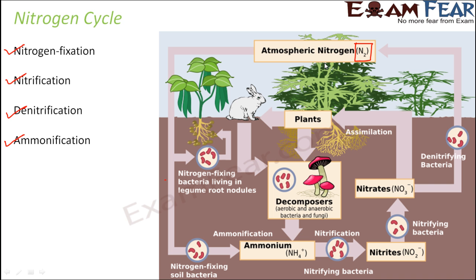How is atmospheric nitrogen given back to the atmosphere? Nitrates can be converted back into atmospheric nitrogen by denitrifying bacteria in a process called denitrification. So atmospheric nitrogen gets converted to nitrates through nitrogen fixation, ammonification, and nitrification; while denitrification helps convert nitrates back into gaseous nitrogen in the atmosphere. These four processes together help the nitrogen cycle operate.